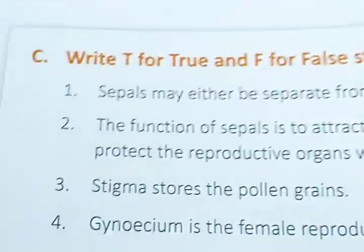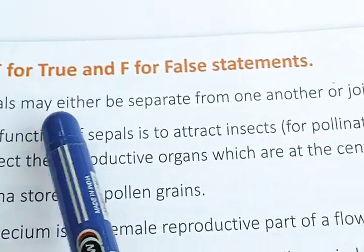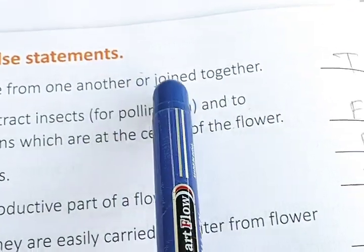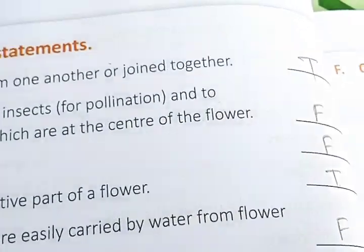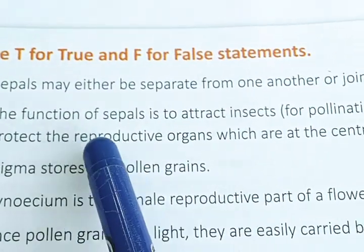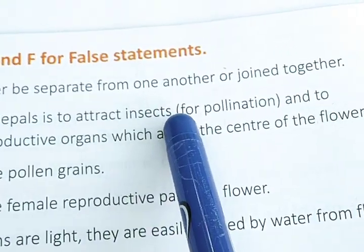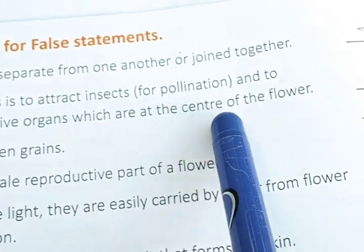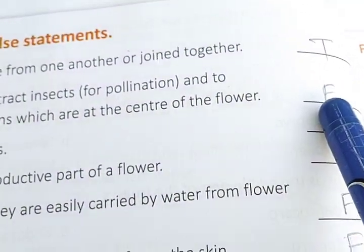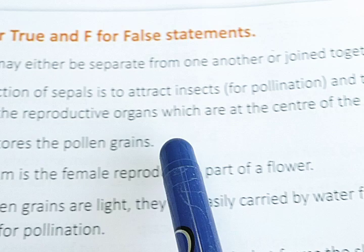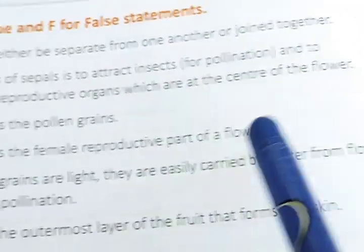True or false: sepals may either be separated from one another or joined together — true. The function of sepals is to attract insects and to protect the reproductive organs at the center of the flower — false. Stigma stores the pollen grains — false.